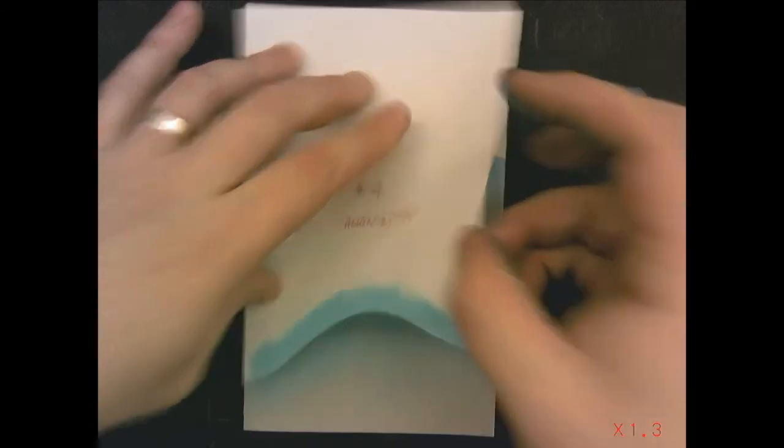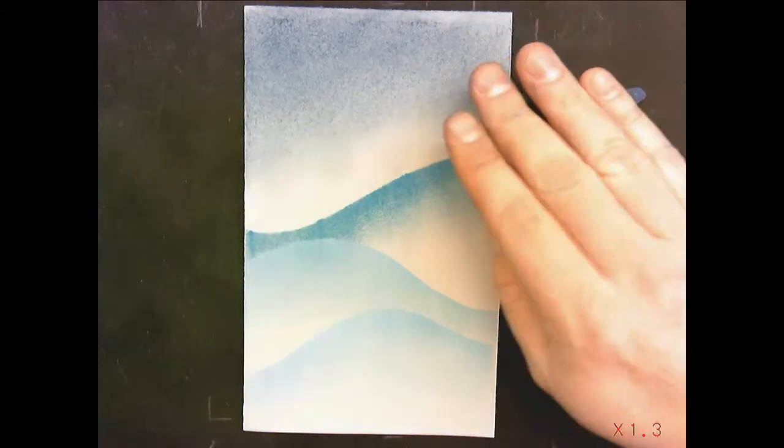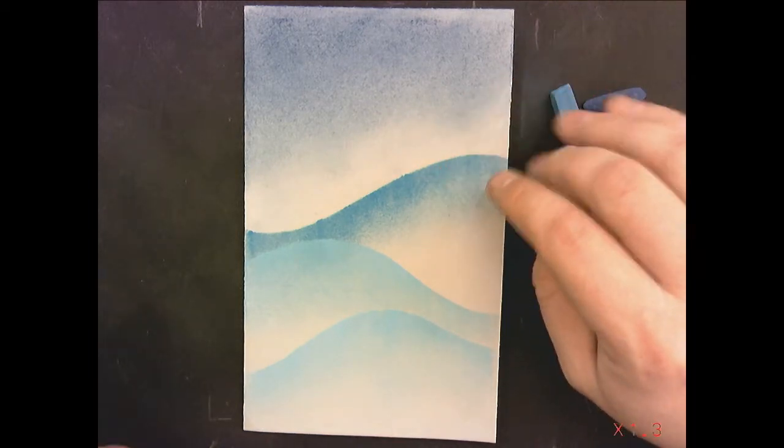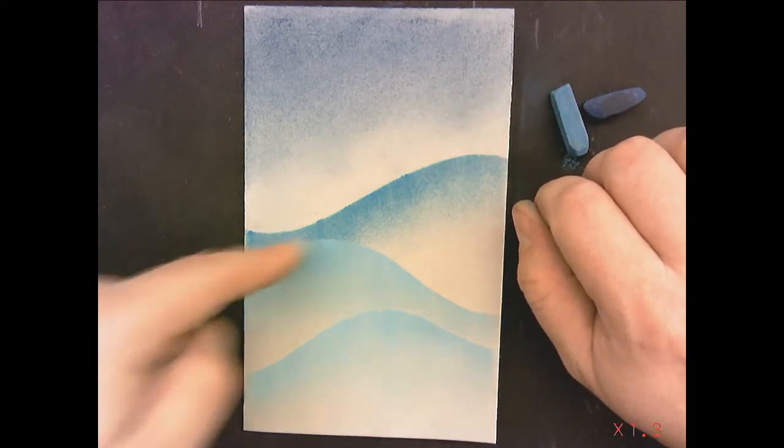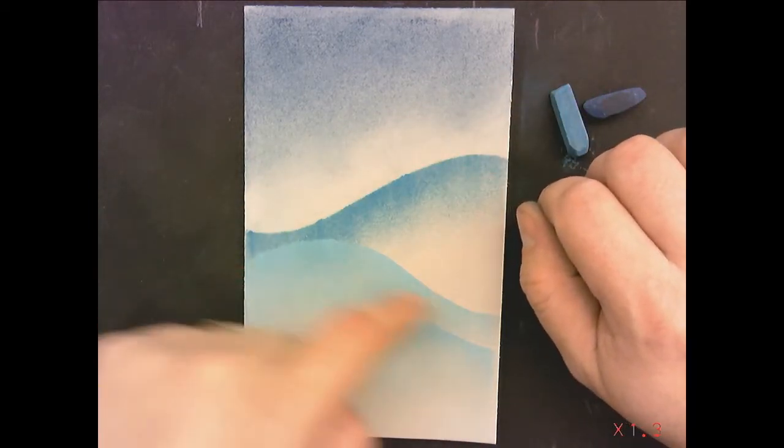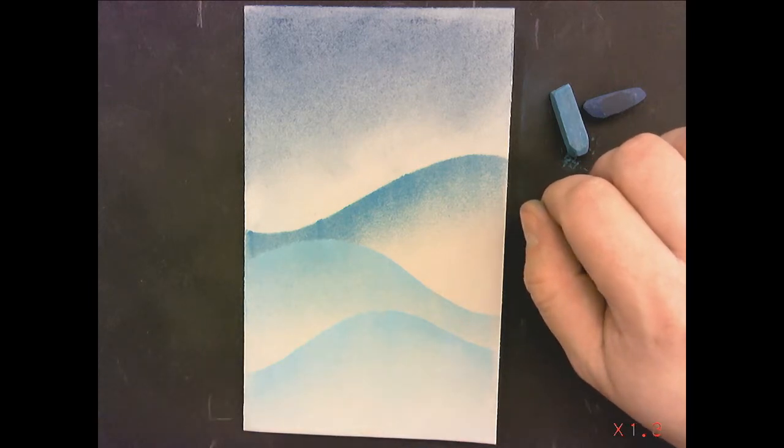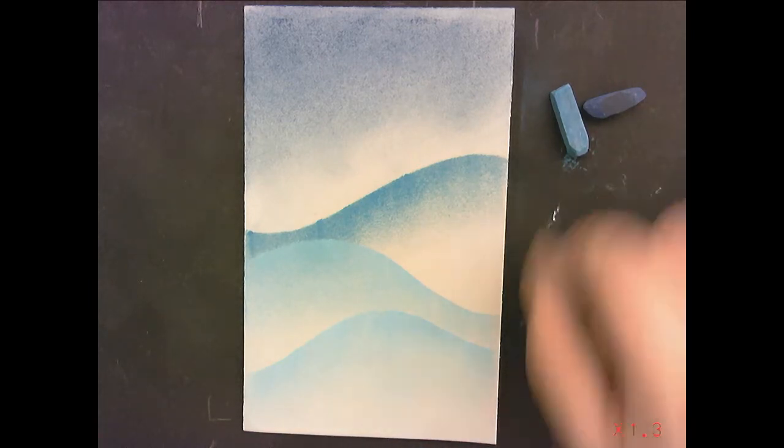Go ahead and blend along the edge to make the color fade. If you need to put more pastel on, you can do that. We now have a set of three hills that are laid out against a sky. Sort of a nice, neat little design.